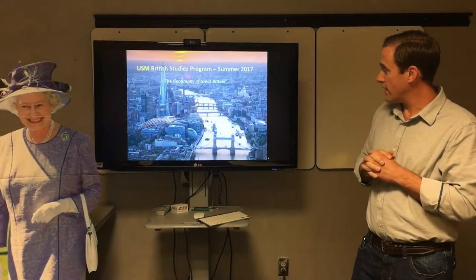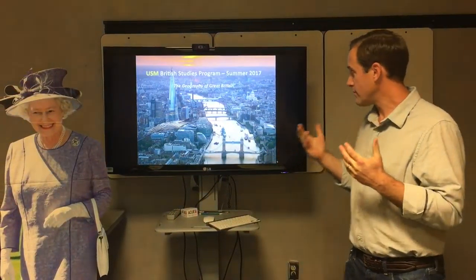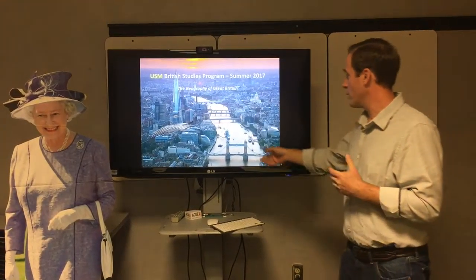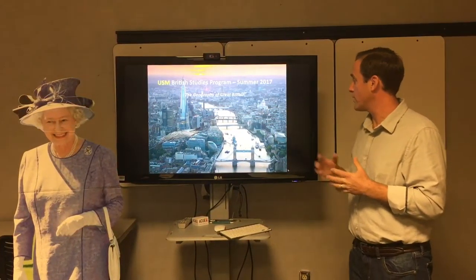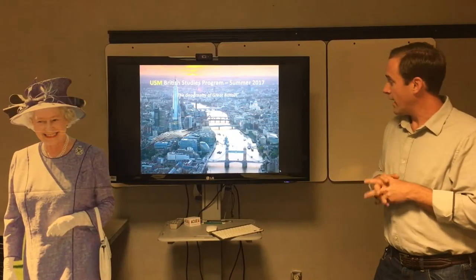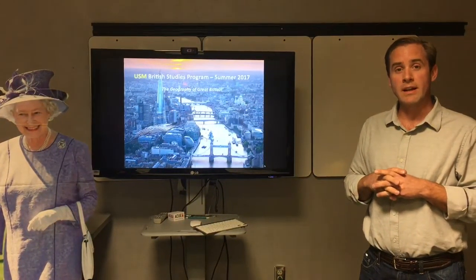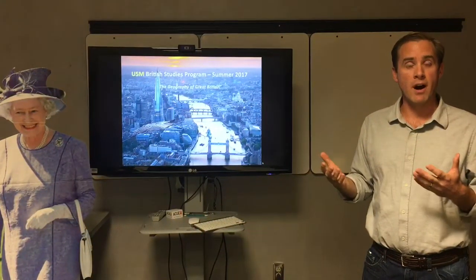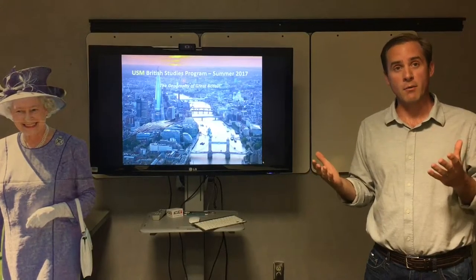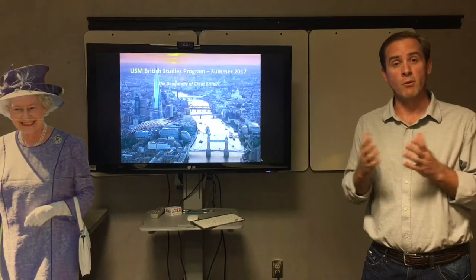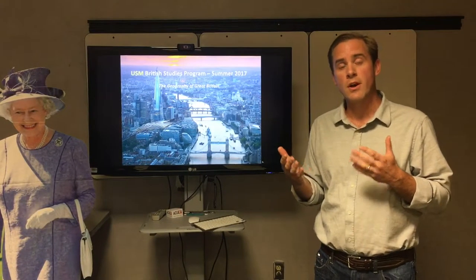If you look at a cityscape like that — modern-day London — and you see Tower Bridge, and you see the Shard, and St. Paul's, and any other sort of landmarks around the city, you're looking at a complete and utter built environment. You're looking at an environment that doesn't look anything like what it used to or what it did naturally. And that's sort of the gist of the course.